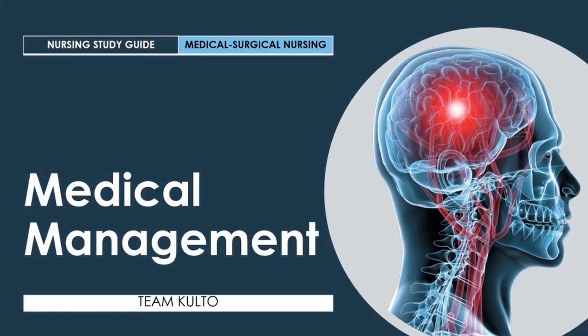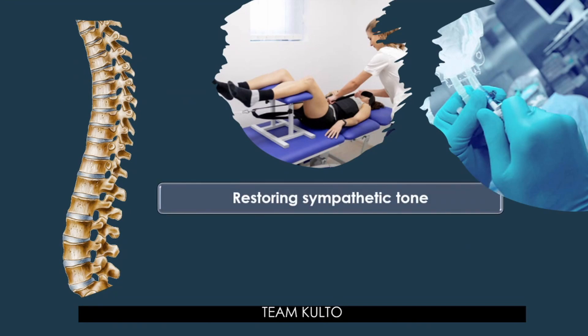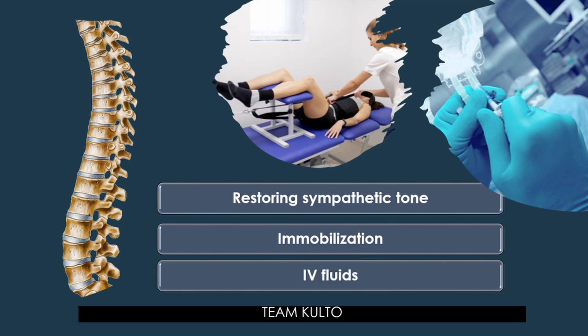How are you going to manage your neurogenic shock? The treatment of neurogenic shock involves the following. Restoring sympathetic tone — either through stabilization of a spinal cord injury, or in the instance of spinal anesthesia, by positioning the patient appropriately. Immobilization: if the patient has a suspected case of spinal cord injury, a traction may be needed to stabilize the spine and bring it to proper alignment. IV fluids: administration of IV fluids is done to stabilize the patient's blood pressure.